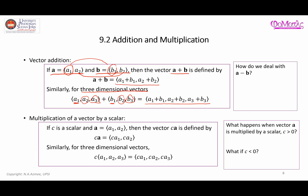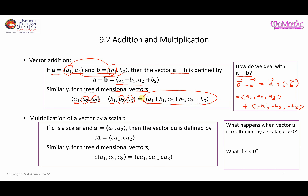What if you have a subtraction process? For example, vector A minus vector B. In this case, A minus B is the same as A plus the negative of vector B. So this becomes (a1, a2, a3) plus (-b1, -b2, -b3). It is the same process — you just follow the same addition procedure shown in this purple box.